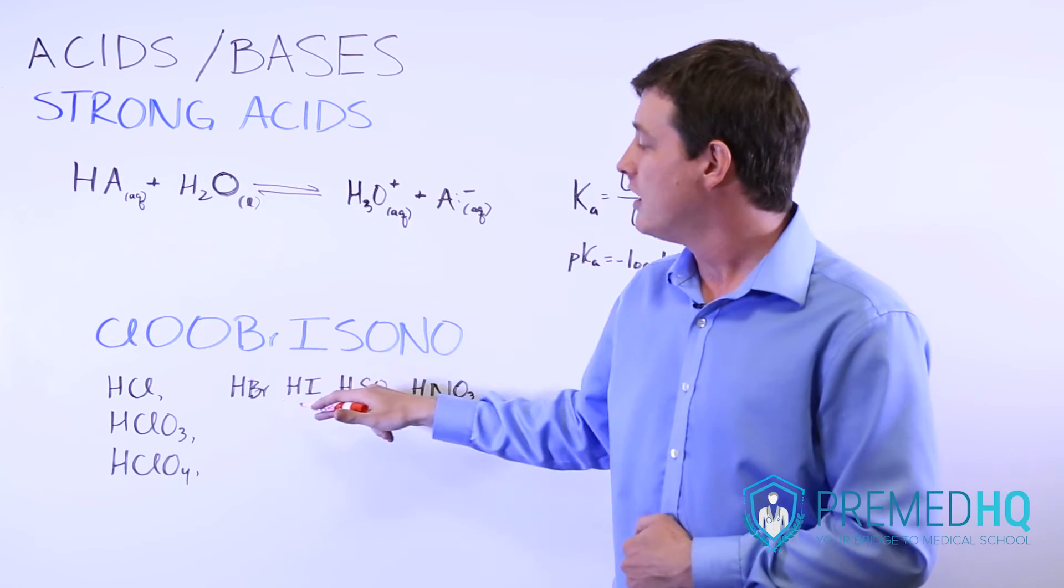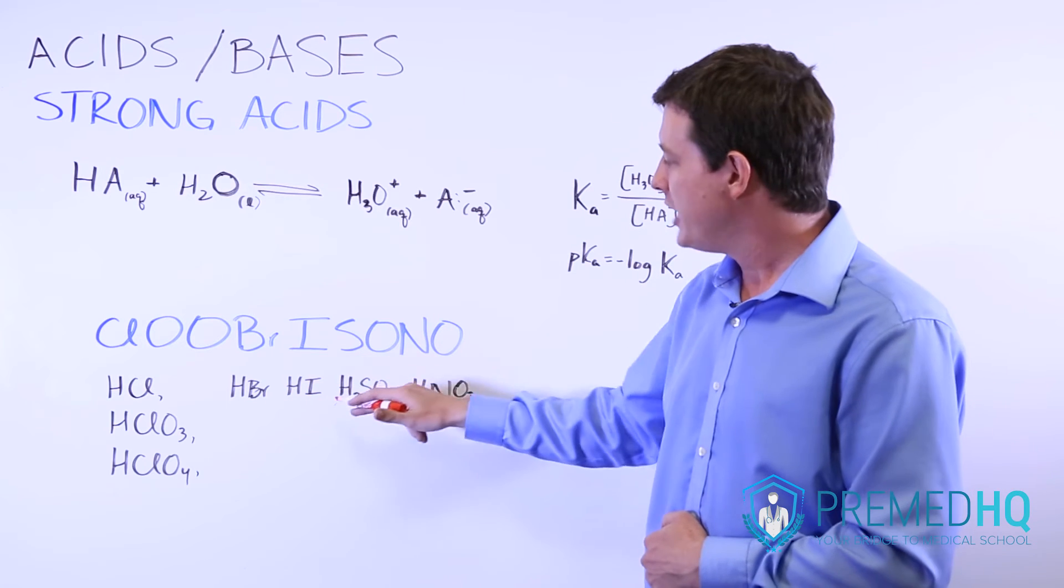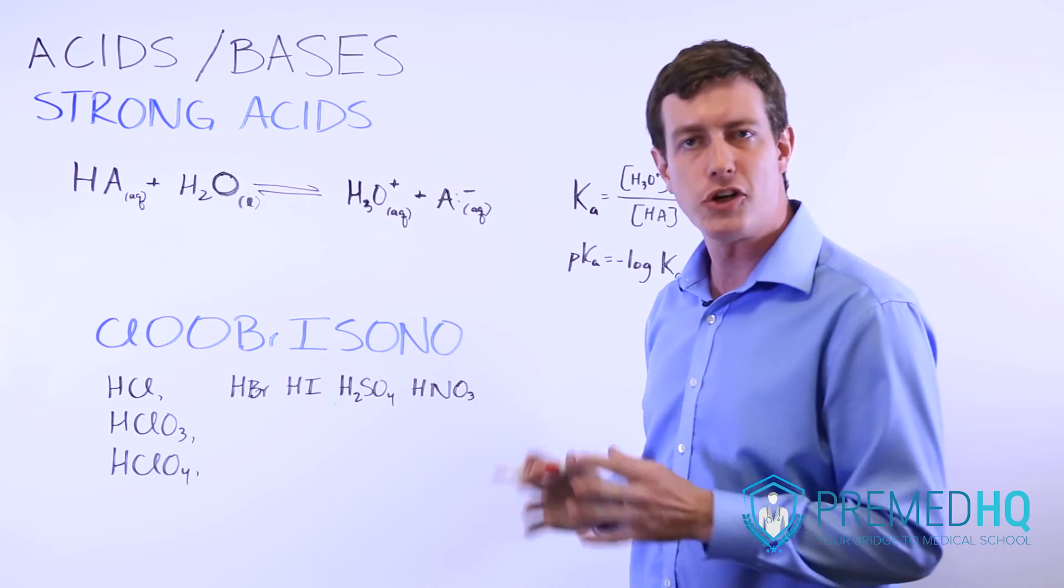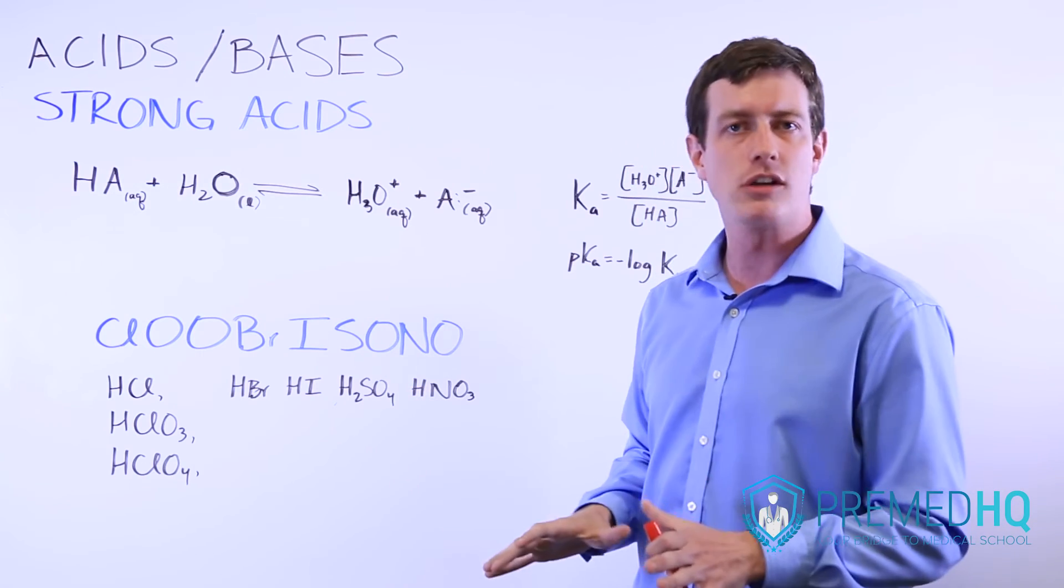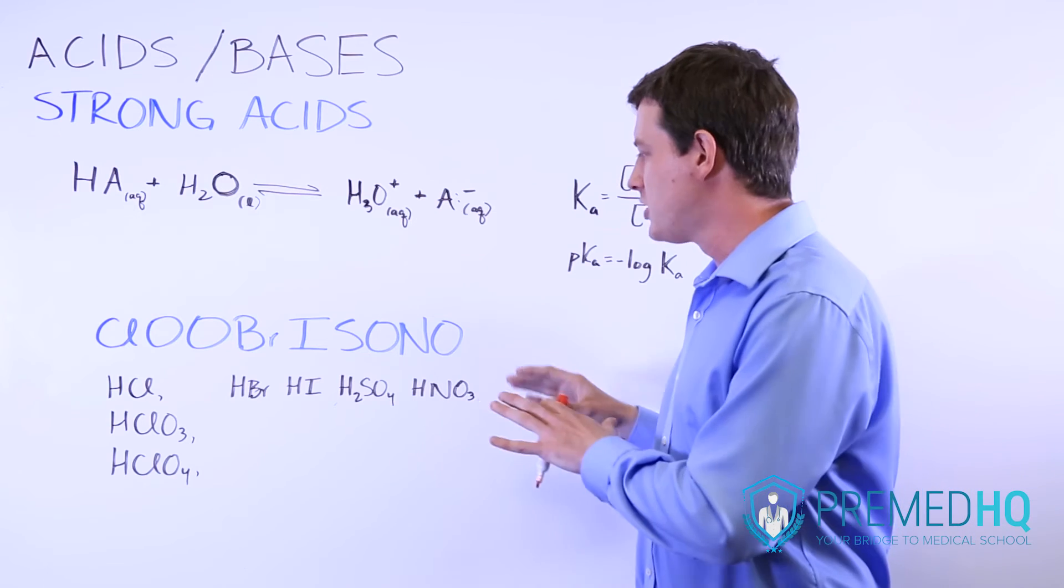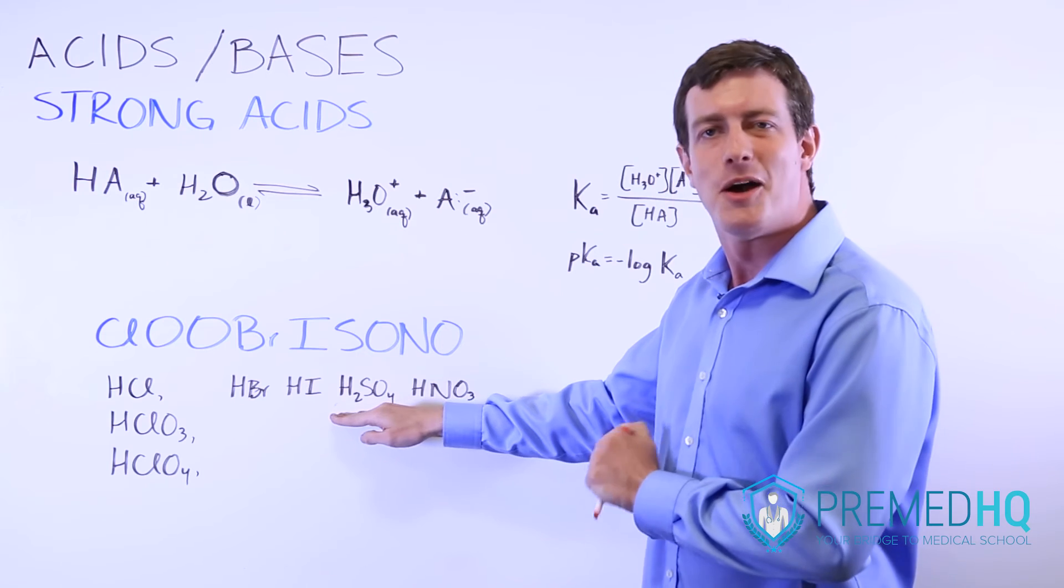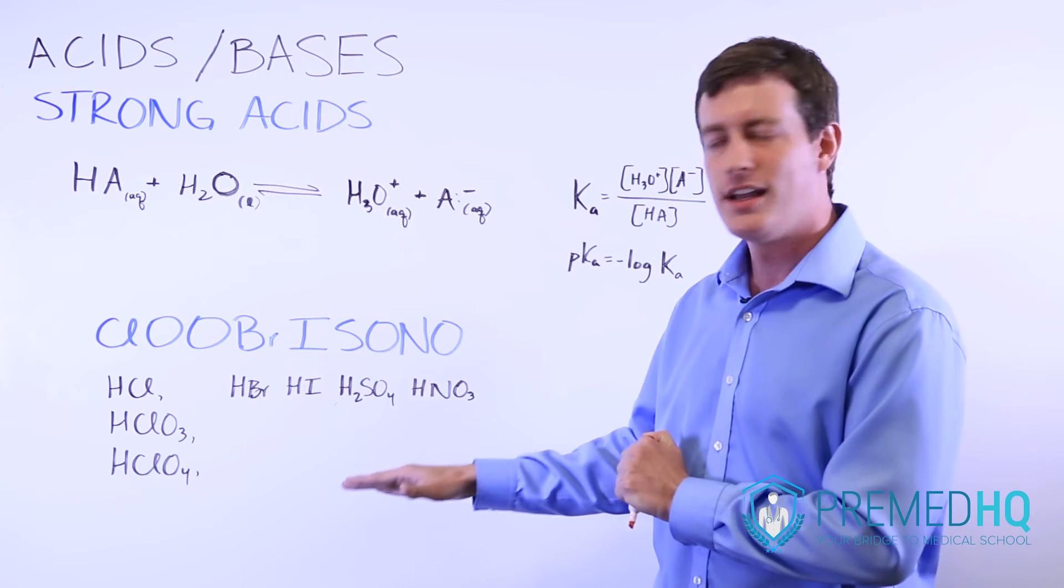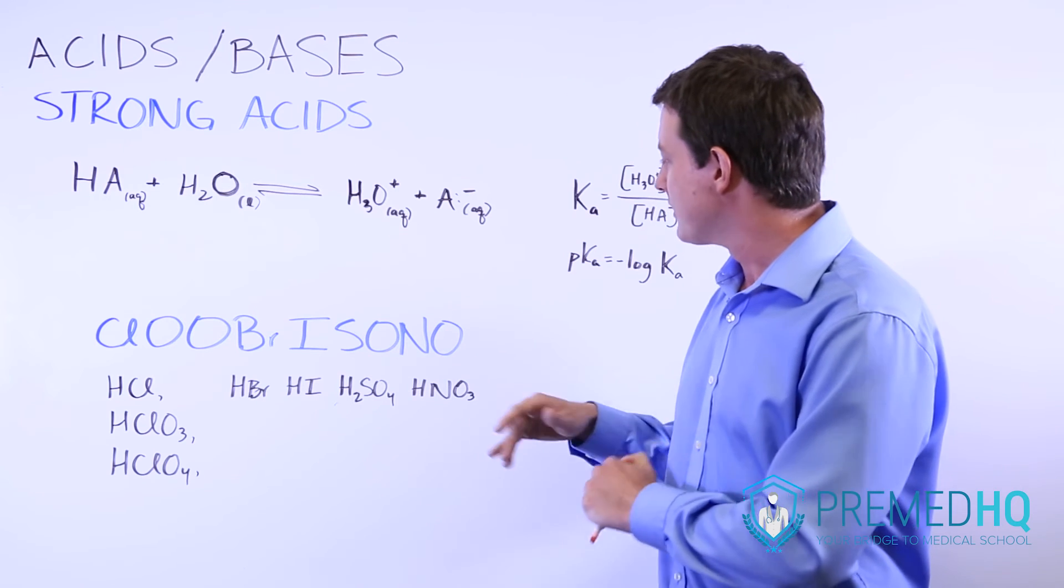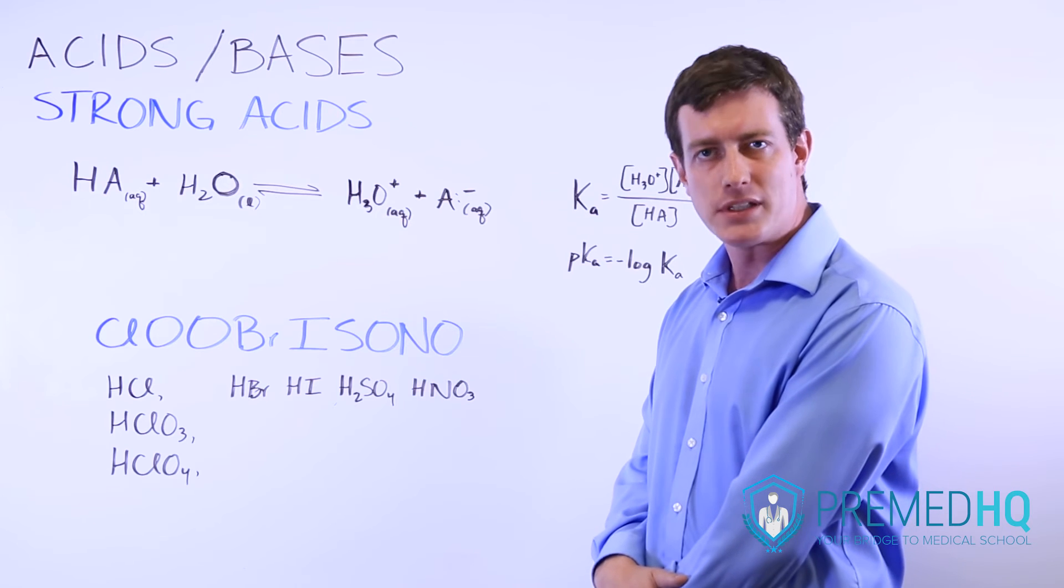You have HBr, which is hydrobromic acid, HI, hydroiodic acid, H2SO4, which is sulfuric acid, and for which the first proton is strongly acidic. You can assume with H2SO4 that that first proton of each of these molecules will be dissociated and will be released into the solution. And finally, nitric acid. And nitric acid is HNO3, and that dissociates completely as well.